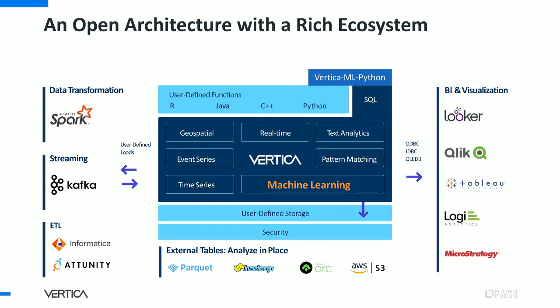Vertica is an open architecture with a rich ecosystem, offering many options for data transformation, ingesting data from different tools, and connecting via ODBC, JDBC, and other connectors to BI and visualization tools. Vertica sits in the middle, supporting external tables and in-place analytics on Arc, cloud, or on-prem. It provides a lot of options for performing data analytics at scale, and machine learning is a core component of that.